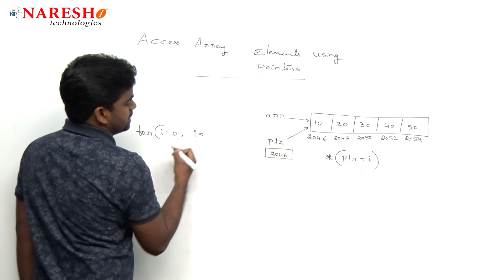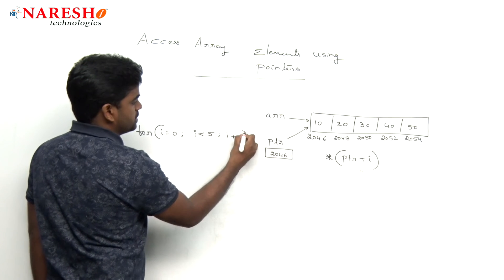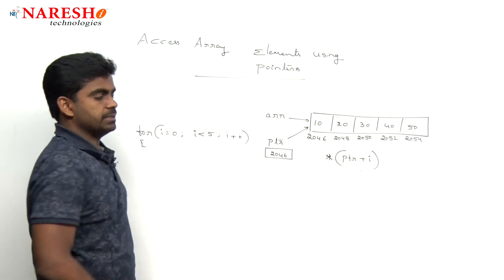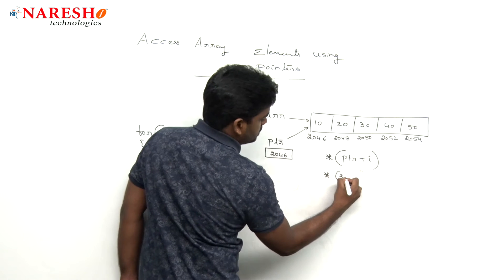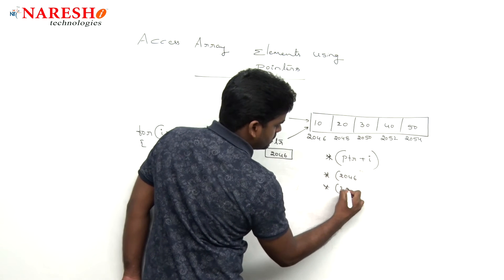For example, i is less than size 5, i plus plus. The pointer value is 2046 always.